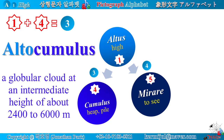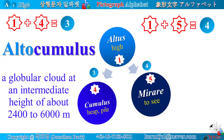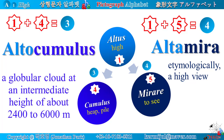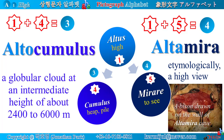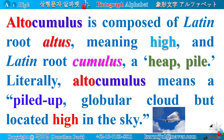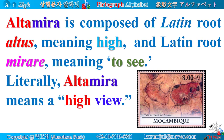Altocumulus is a globular cloud at an intermediate height of about 2,400 to 6,000 meters. Star number one and star number five make the place name Altamira. Literally, Altamira means a high view, or looking down from a high hill. Look at the bison drawn on the wall of Altamira cave. Altocumulus is composed of altus meaning high and cumulus meaning a heap or pile — literally, a piled-up globular cloud located high in the sky. Altamira is composed of altus meaning high and mirare meaning to see — literally, a high view.